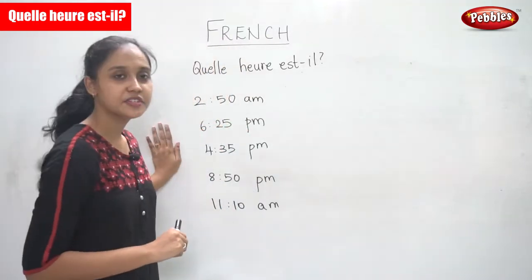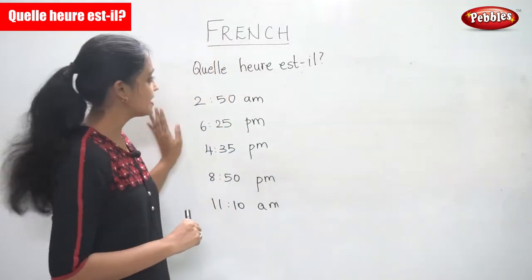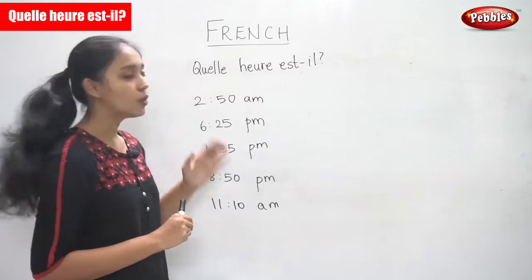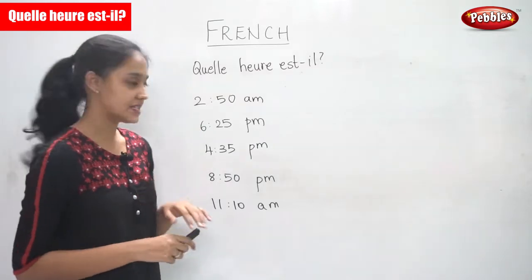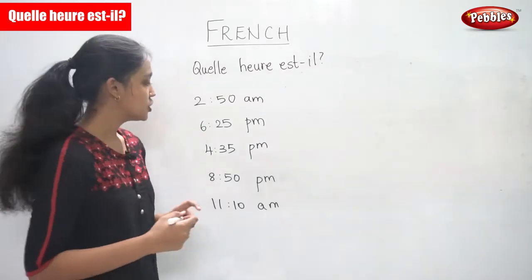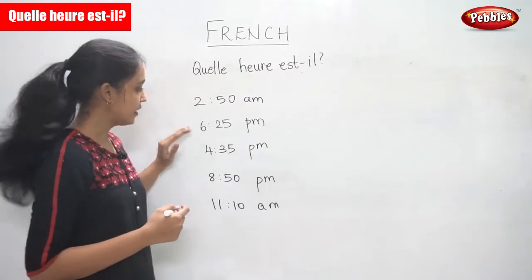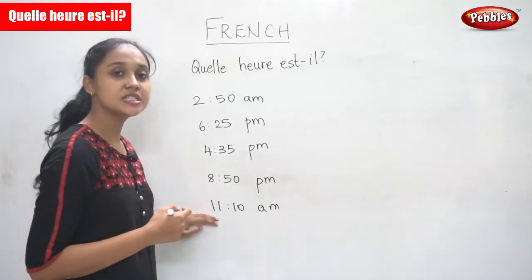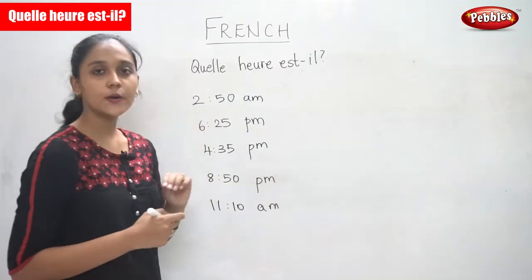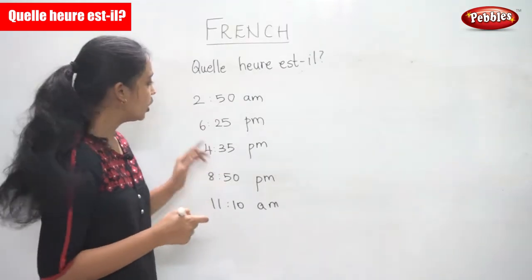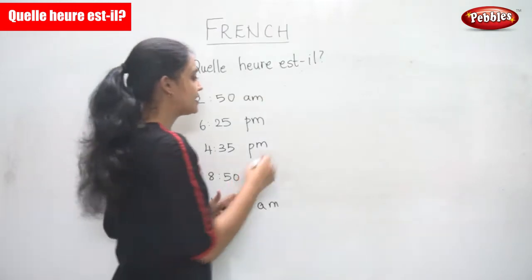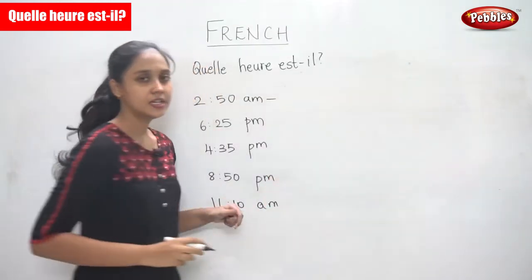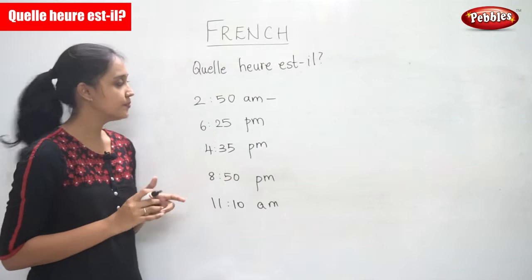The name of this exercise is 'What time is it?' Here I have five different times. You are going to tell me what the time is, and we are going to write it in words. Let us begin with the first one.